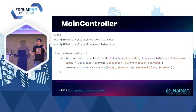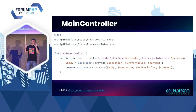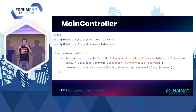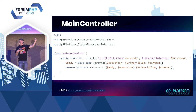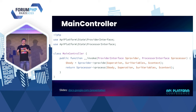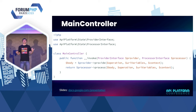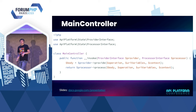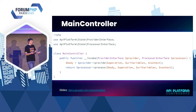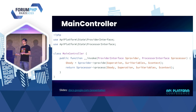Tout ça, si on le met dans un contrôleur, ça nous donne ça. C'est un peu simplifié, mais on a notre contrôleur qui est appelé : d'abord on va appeler la chaîne des providers pour faire toute la résolution dont j'ai parlé, puis on va renvoyer toute la chaîne des processeurs jusqu'à obtenir une réponse HTTP. C'est vachement bien parce que ça va me permettre de mettre API Platform dans n'importe quel framework qu'on veut.